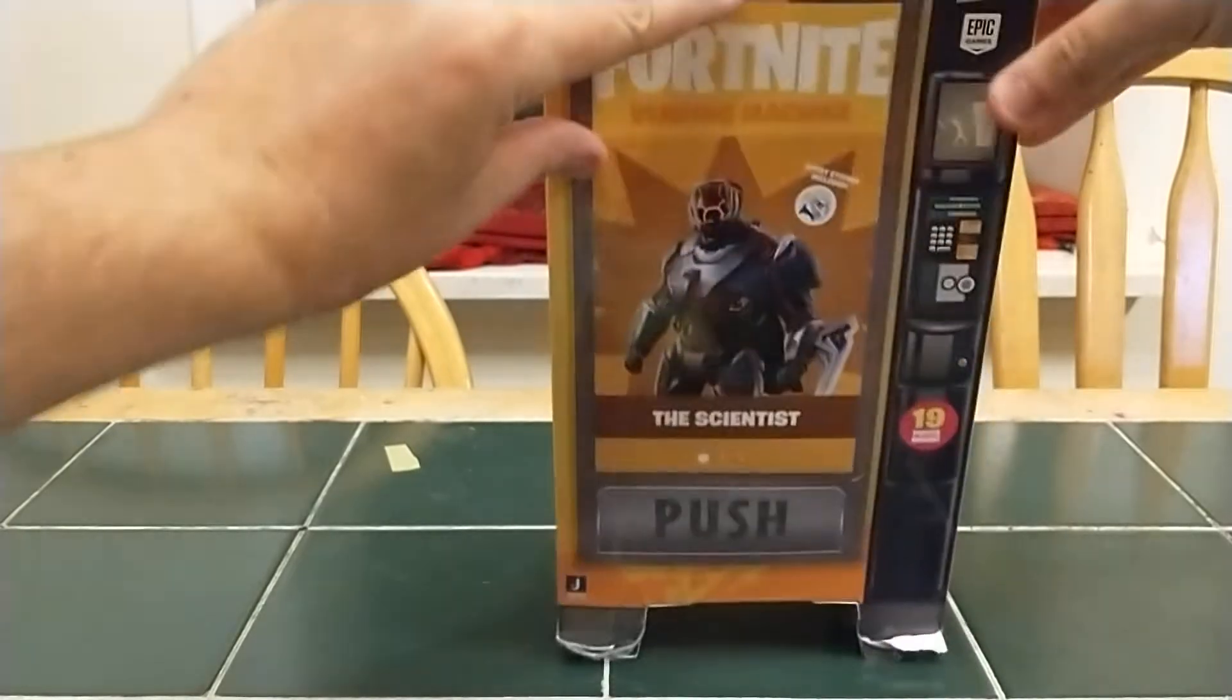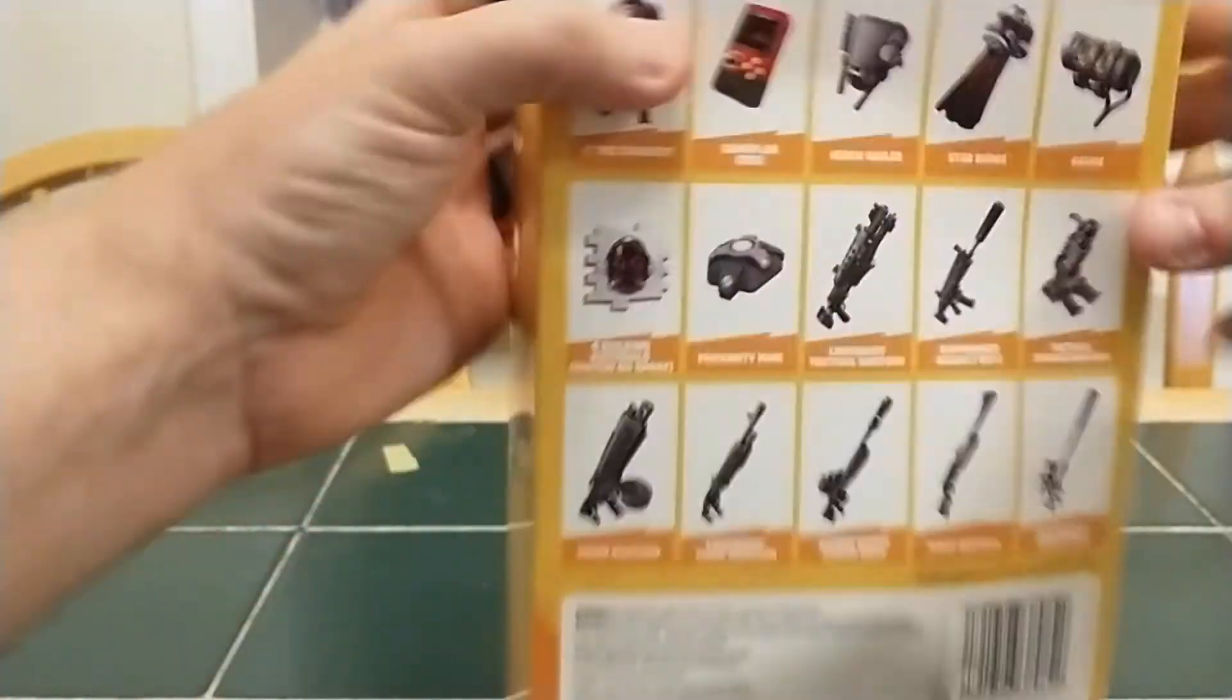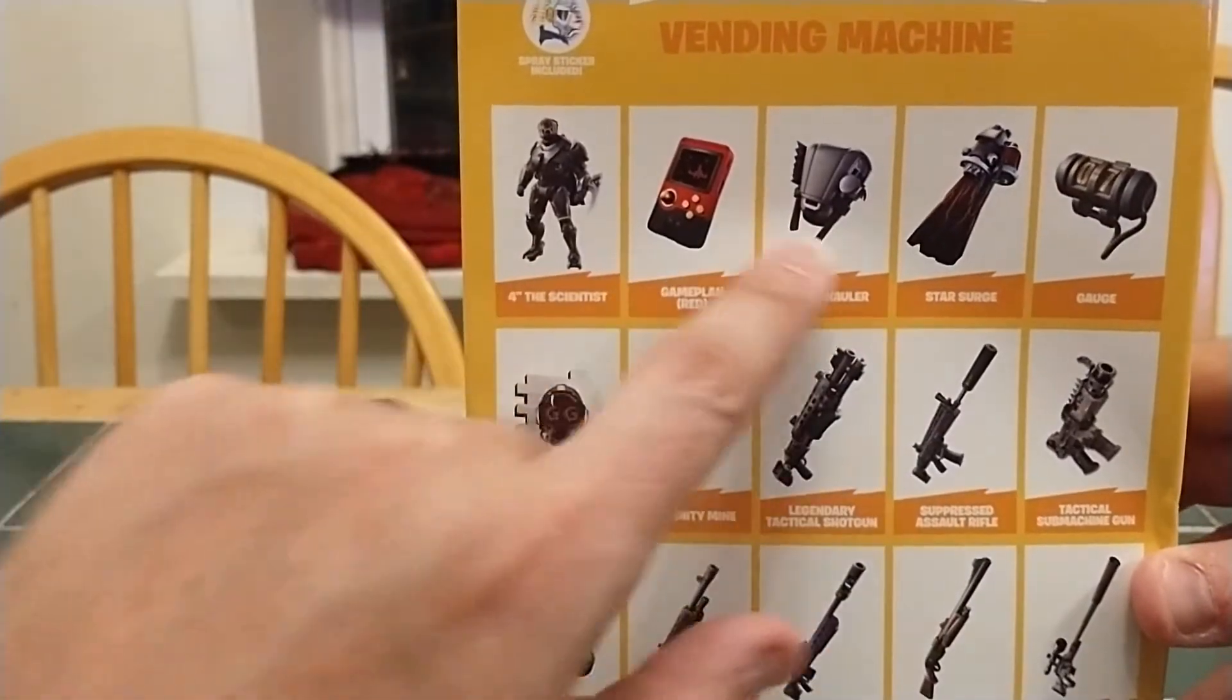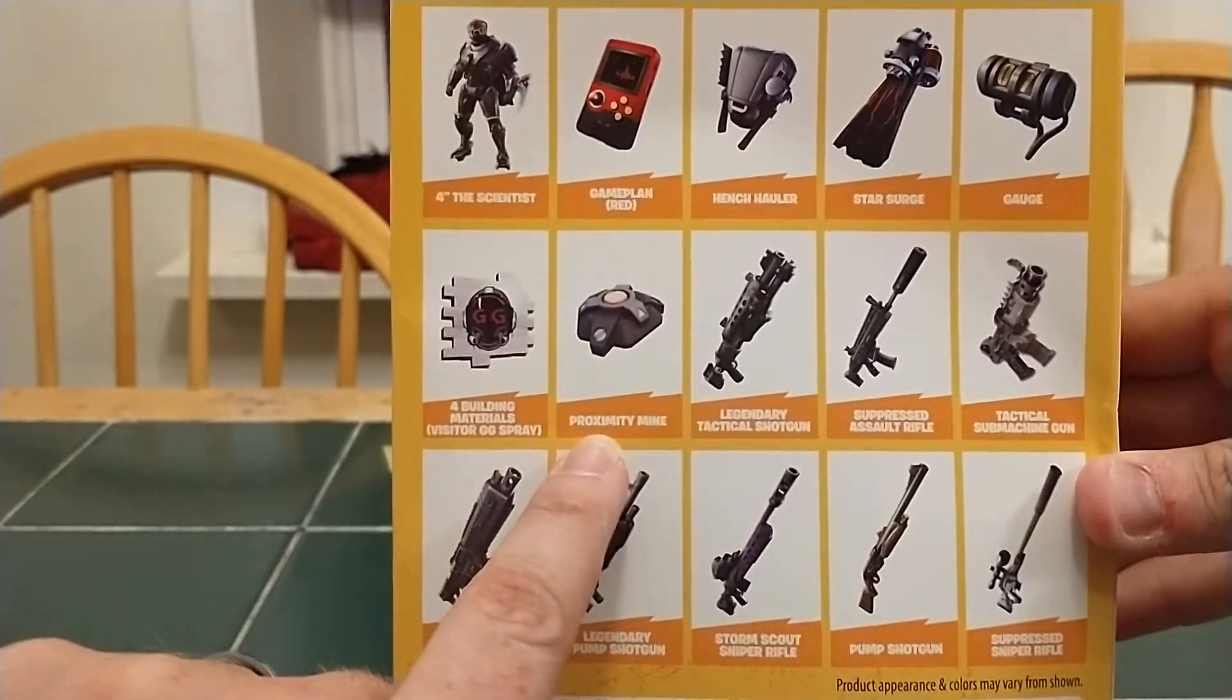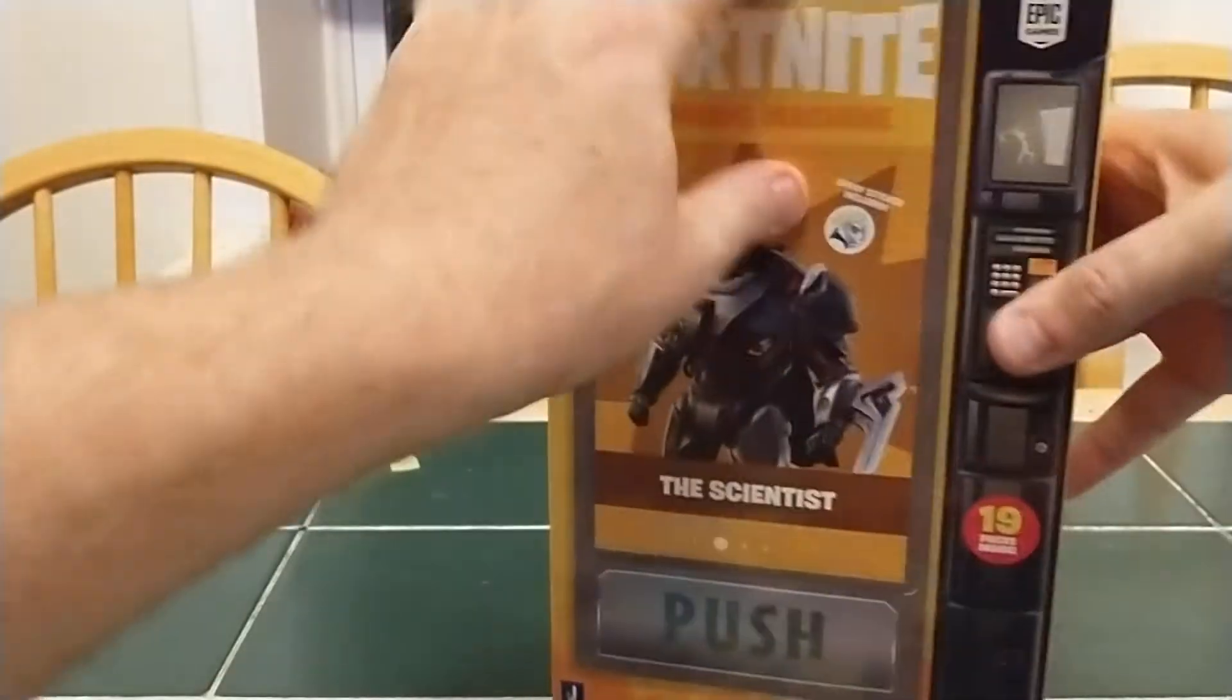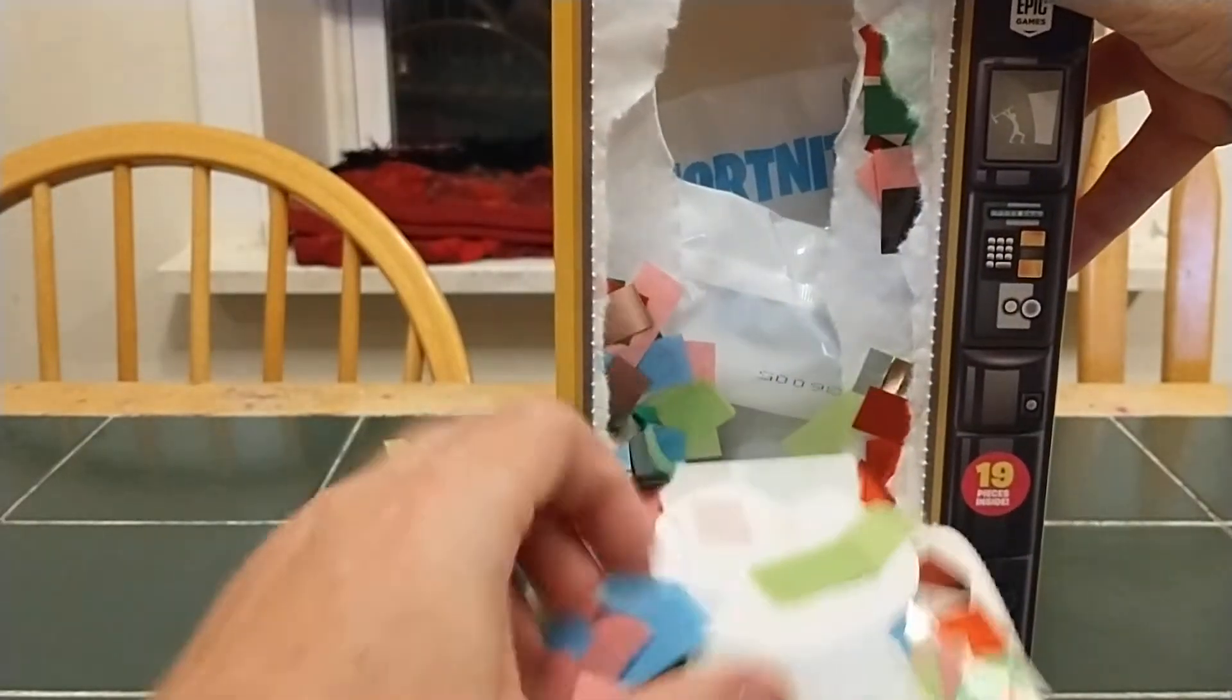So we got the pull here tab. Oh, before I do that, let's look at the back here. Four inch scientist. Some back bling. Let's build materials. Proximity mine, that's our item. And then all of our weapons. Pull here. And, bachow.